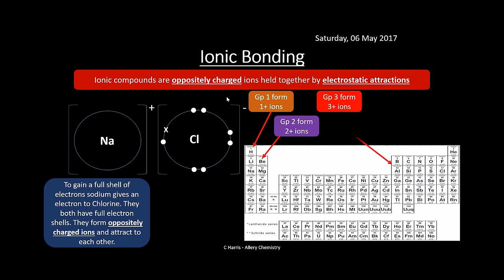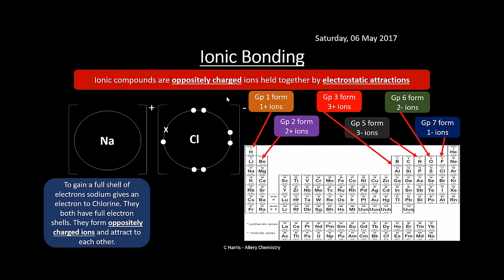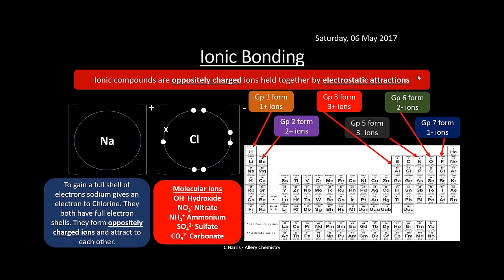These ions — depending on the group — will determine what type of ion you form. Group 1 all form +1 ions, group 2 form 2+, group 3 form 3+. Group 4 very rarely forms ionic bonds — they're covalent. Group 5 forms 3− ions; it's easier to gain three electrons than lose five. Group 6 forms 2−, group 7 forms 1−.